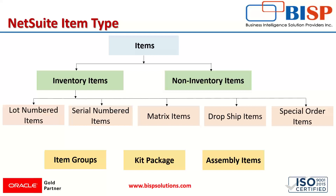Non-inventory items also have subcategories: non-inventory item for sale, non-inventory item for purchase, and non-inventory item for resale. Along with these two categories, there are also item groups, kit packages, and assembly items. These are clustering item records used to assemble or package several items into one unit — components collected and kept into a group.